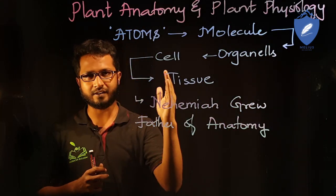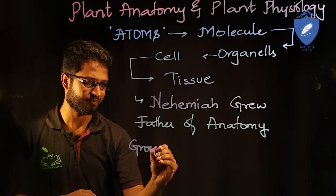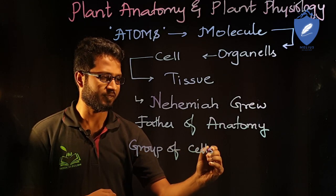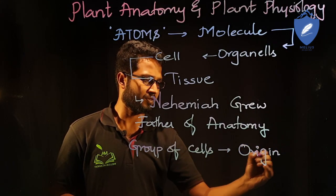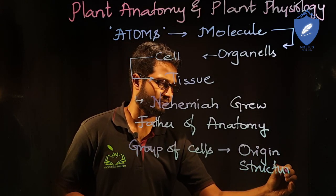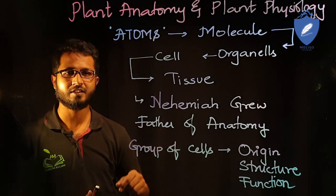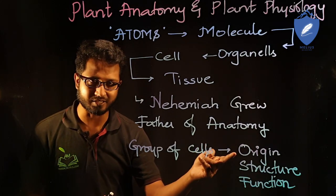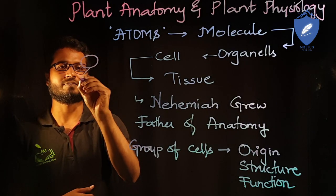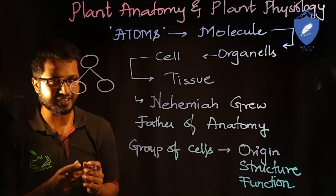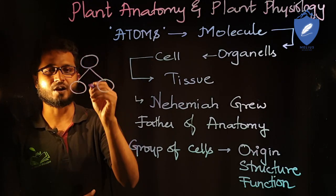If we have to define a tissue: tissue is defined as a group of cells with common origin, common structure, and common function. Common origin means there was initially a mother cell — all cells have originated from this mother cell. The daughter cells are formed from this cell itself, so origin is common for all the daughter cells from one mother cell.